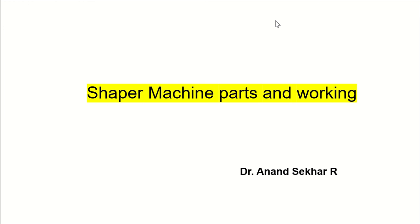Today we are going to discuss about the shaper machine, specifically the different parts of a shaper machine. Before going into the topic, a shaper is actually a reciprocating machine — reciprocating means it moves in two directions, back and forth. Just like a piston reciprocates inside a cylinder in an IC engine, a shaper is also a reciprocating machine.